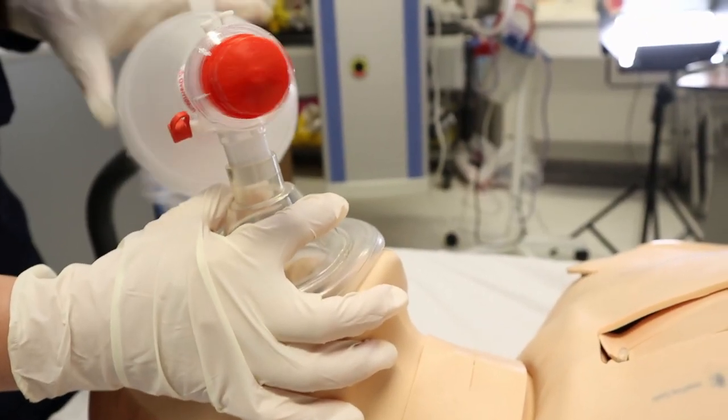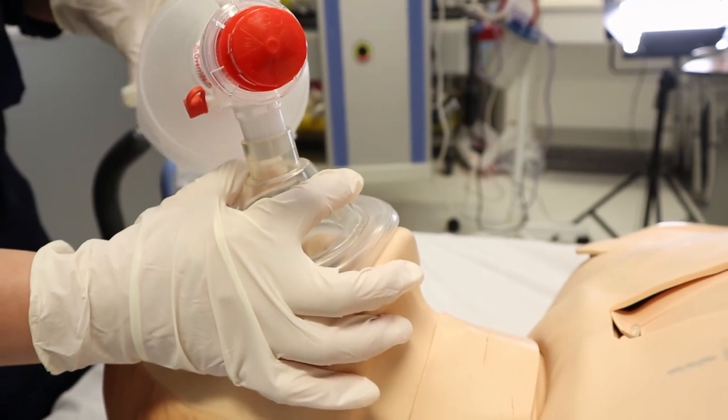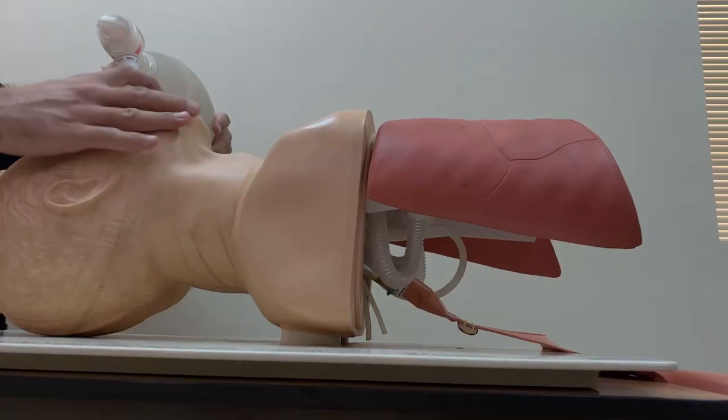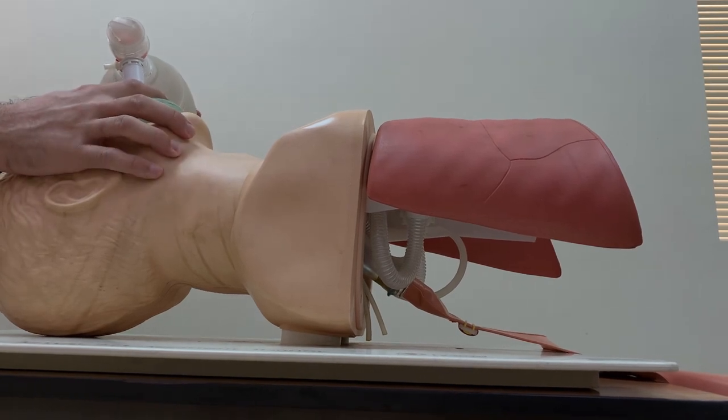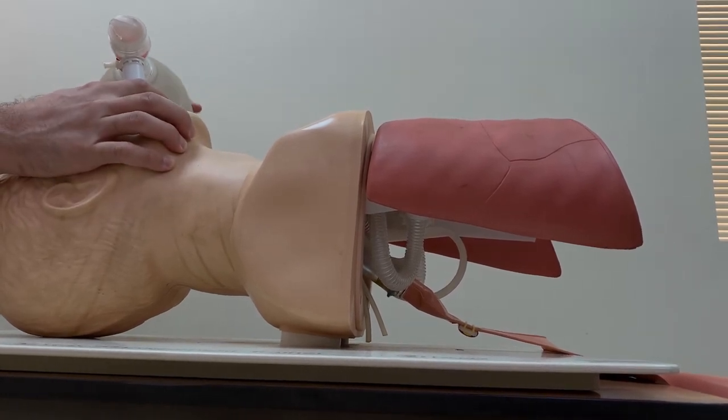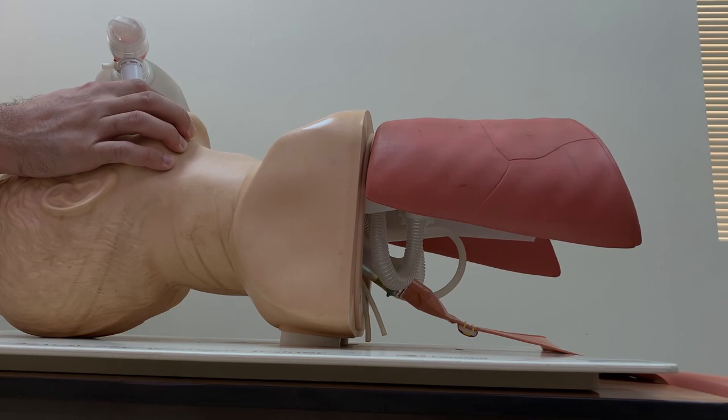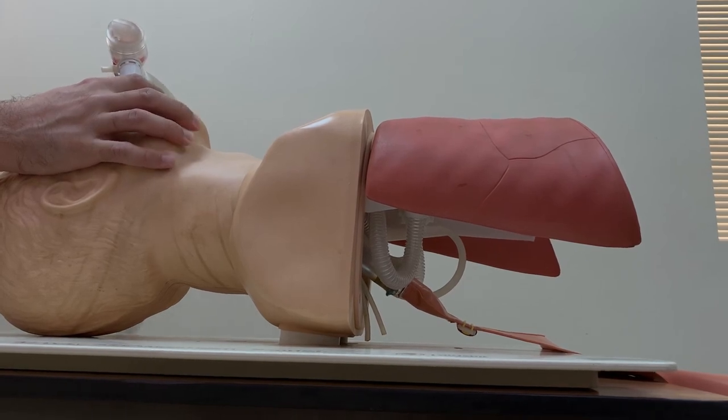We need to observe symmetrical rise and fall of the chest. We can ask somebody to auscultate the breathing equally for the two lungs. You can also use the Ambo bag for the endotracheal tube.